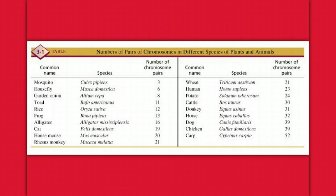Looking at the numbers of pairs of chromosomes in different species: mosquitoes have 3 pairs, a housefly has 6 pairs, a toad has 11, a rice plant has 12, a frog has 13 pairs, a monkey has 21 pairs, and humans have 23 pairs. But the carp has 52 pairs — 104 total chromosomes in every single body cell. So the question is: does chromosome number actually equal complexity? The chromosome number does not equal the complexity of the organism.